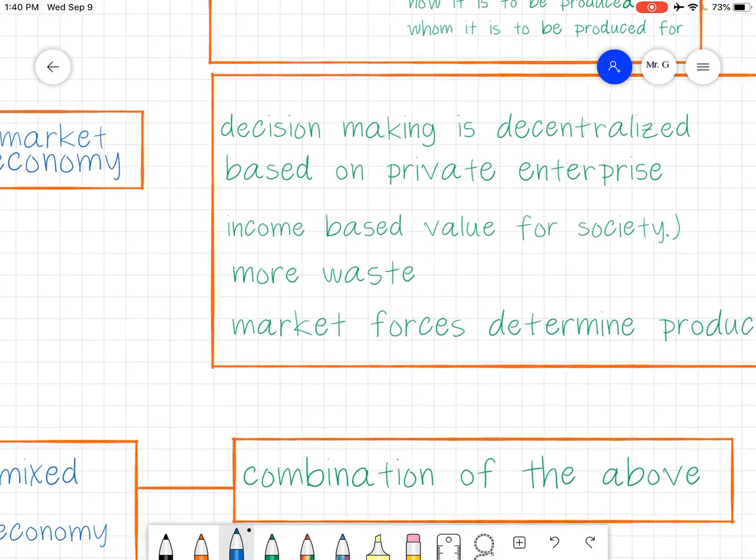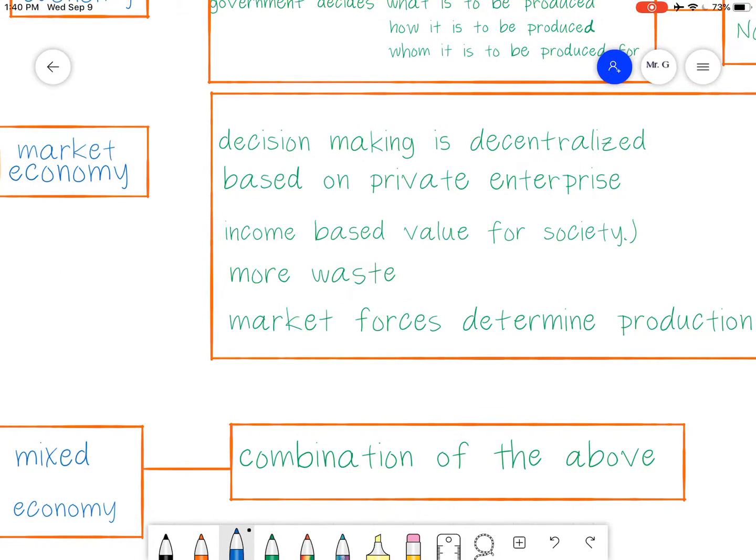The last one here is a market economy. A market economy is basically decentralized. The government doesn't control. They don't say what is actually going to be produced. The person who opens the store, they come up with the goods they want to sell and they sell them. So the government really doesn't have as much control. They put certain regulations in place, but they don't have control over the basic questions of what is being produced, how is it being produced, and for whom it's being produced. They leave it to the market - you figure out what people want and you get that done. Income is based on value for society. If you come up with something that society really values, you get a higher income. If you provide something that society doesn't value as much, you get not as much of an income.